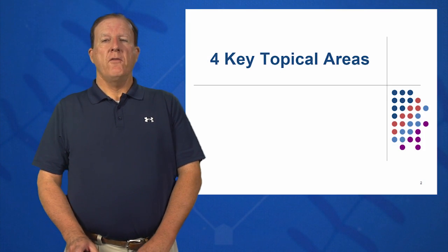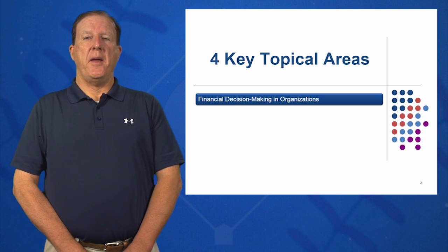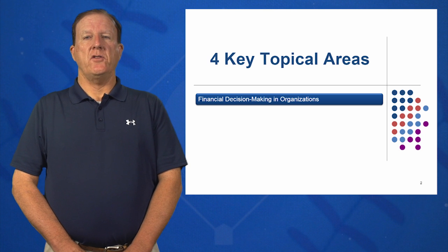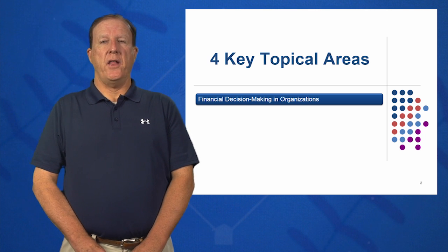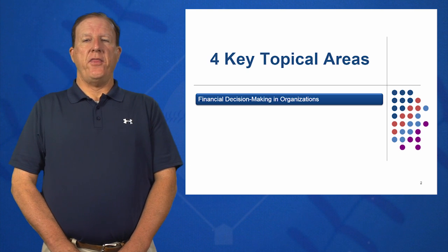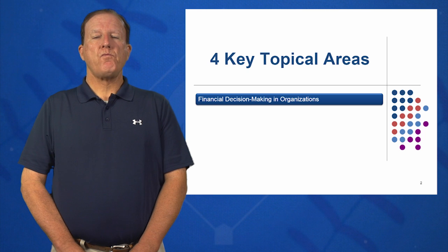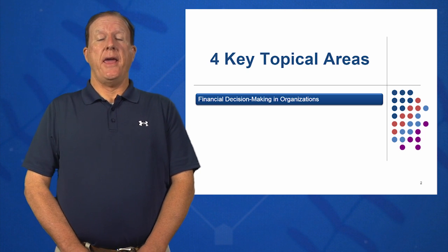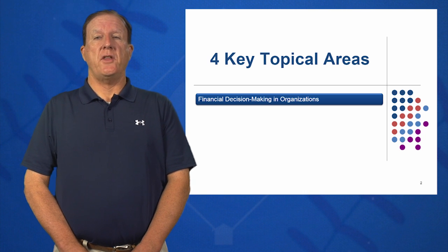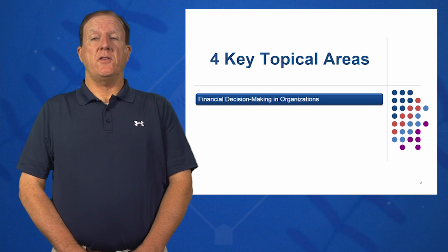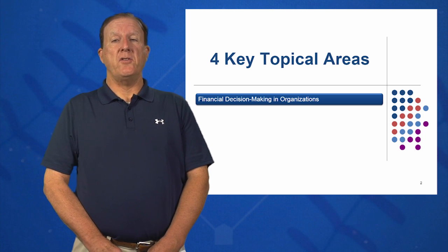Our course is broken up into four key topical areas. First of all, financial decision-making in organizations — how do we make good financial decisions in any organization, be it a corporation, a for-profit, or non-profit? We're going to look at topics like what are the three key things on the mind of the financial manager every day, how do you read financial statements effectively, and how can we see how the company's doing based on key financial ratios.